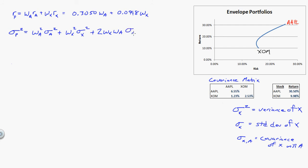So here I have the variance of Apple, 0.0655, times its weight squared, plus the variance of Exxon, 0.0253, times the weight of Exxon squared.